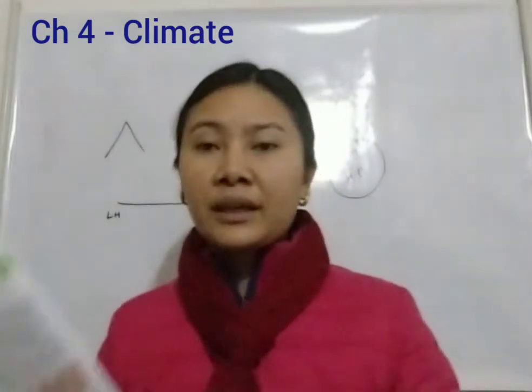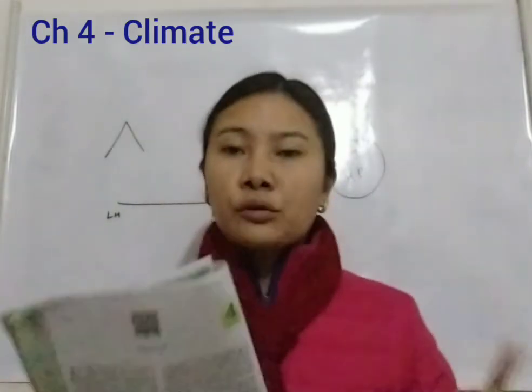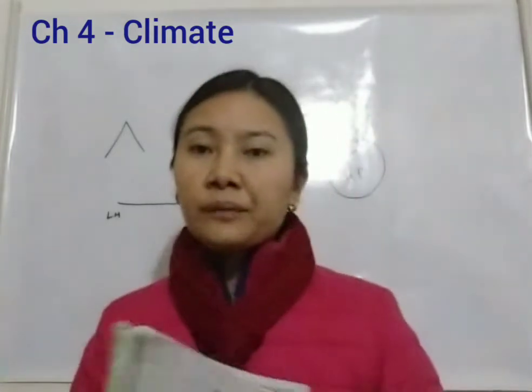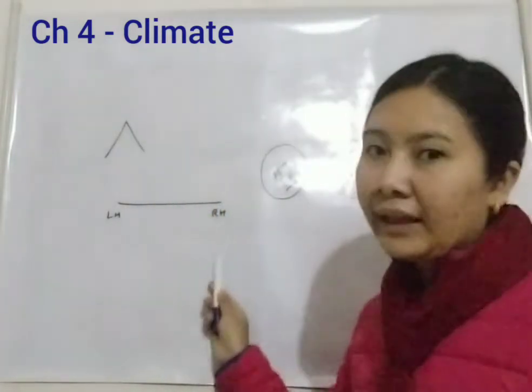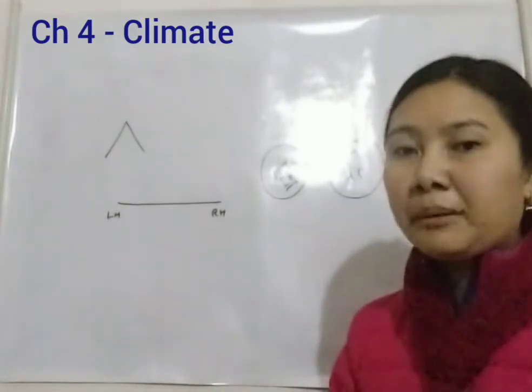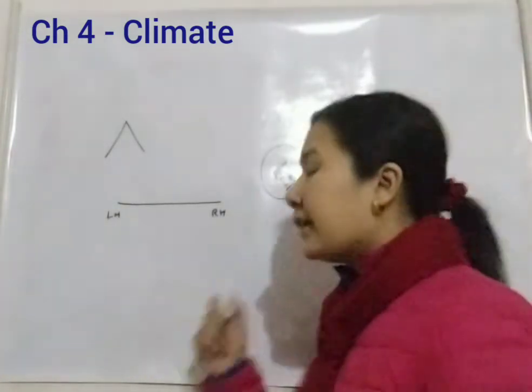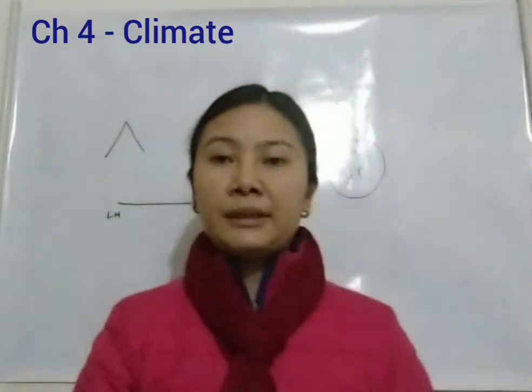We have six climatic controls. The first is latitude — which, as I said, refers to imaginary horizontal lines. The second is altitude, meaning height above sea level. This is how we can learn and categorize these controls.